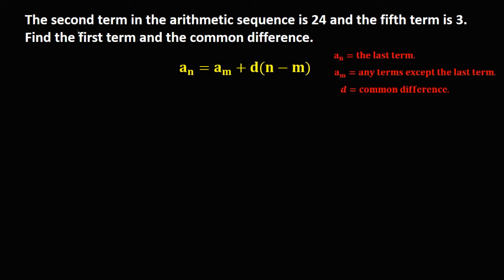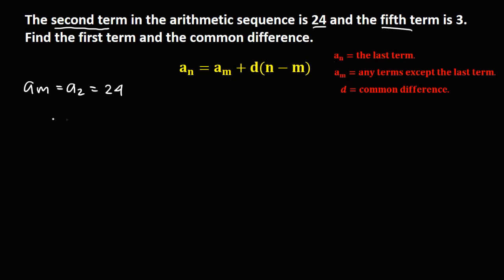From the given, if we let the second term as a sub m, so a sub m is the second term — that's a sub 2 — and its value is 24. Then if we let the fifth term as the last term, a sub n, that's a sub 5, and its value is positive 3.